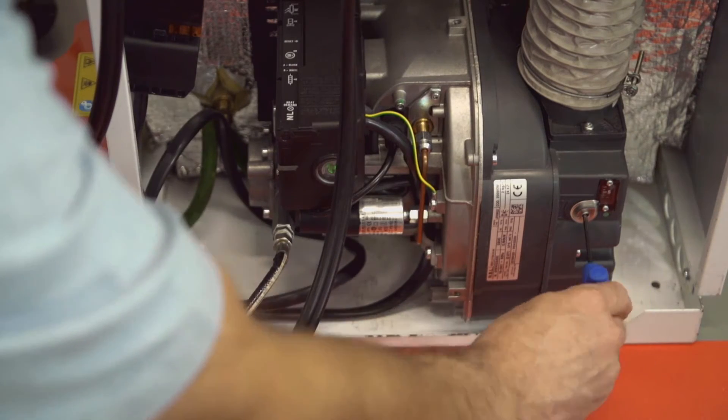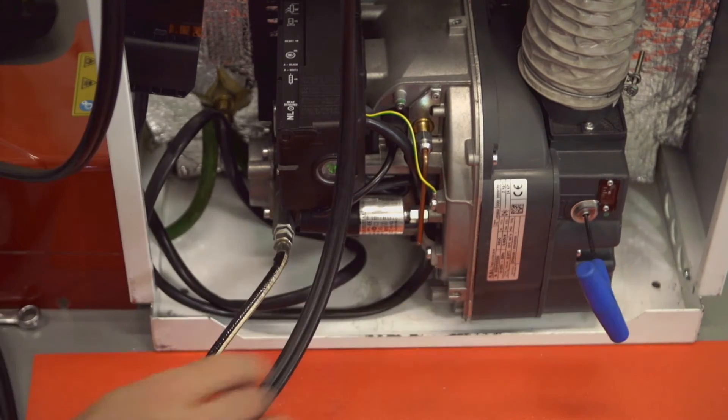Remember, to increase the CO2 reading, close down the air shutter by turning it anticlockwise. Or to reduce the CO2 reading, open up the air shutter by turning it clockwise.